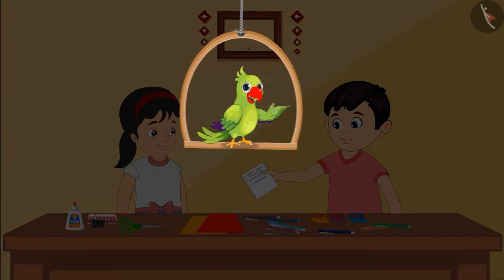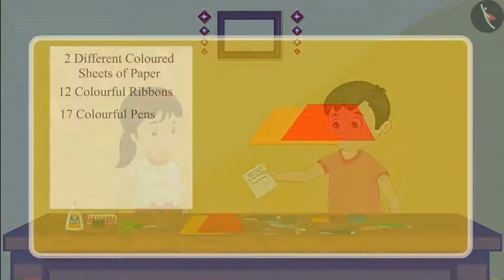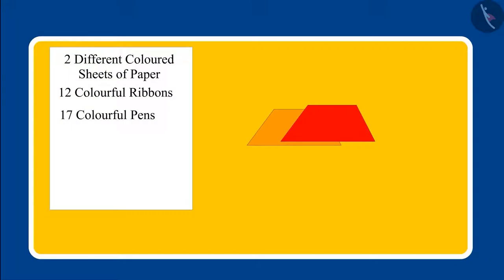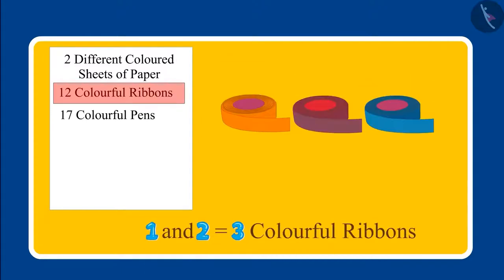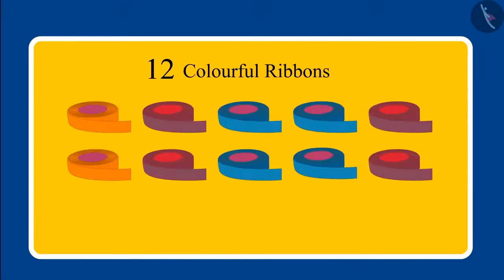See this Pinky. Children, out of Pinky and Chotu, who do you think is correct? Come on, let's see. First, two sheets of paper is written in the list, which Chotu brought correctly. Tell me what is written below that — one and two — which means three colorful ribbons?